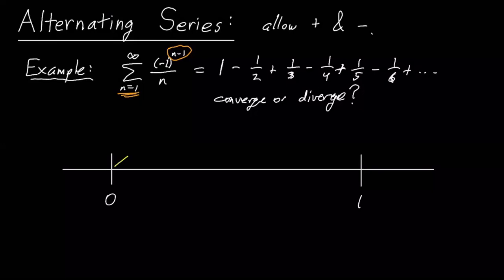So a way we can visualize what's happening with this series is we can say, okay, well, the first thing we do is we add one, right? That's plus one, but then we subtract a half. So we end up there, minus a half, right? Then we add a third, so we go back in the other direction that we came, plus a third right there.